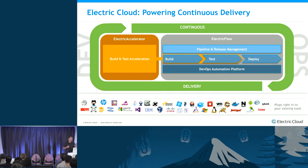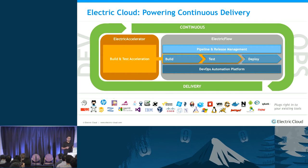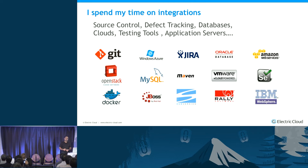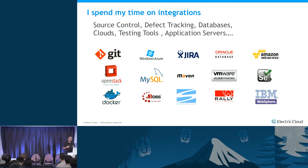A little bit about Electric Cloud to frame the rest of the presentation. We are an enterprise software company that focuses on application delivery, trying to get software out faster for our customers and users — everything from when a developer commits all the way to production. I spend my time on our integrations and plugins; I'm the team lead for this group. We cover all the different tools that exist — source control, app servers, issue tracking — so people can construct their delivery pipelines using these tools.